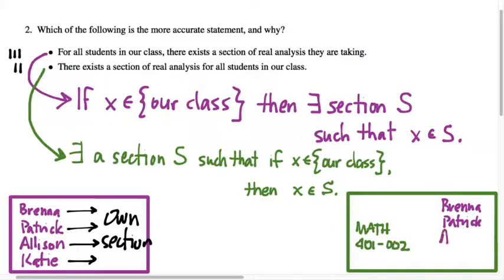One of the ways I like to tease this apart is that when the there exists comes first, as it does in the green statement up here, I'll often just add an extra word to it to remind myself. When it says there exists a section, I'll go in here and add there exists a unique section when it comes first. Because that brings a single section onto the table and then says afterwards, everything, all of for alls, have to apply to that one section.